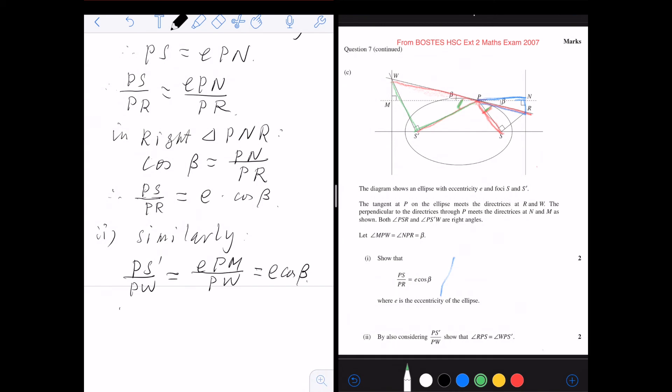So therefore, PS over PR and PS dash over PW. Then we go back to the question here. We know PS over PR, which is this one, and PS over PW, that's actually equal to cos this angle because this is a right angle.